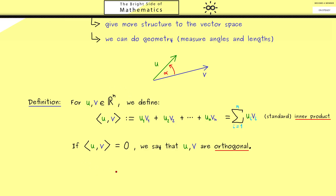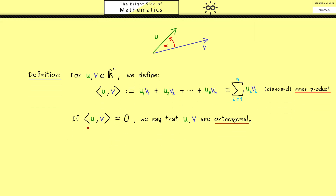Later we will also consider other geometries. For example, if we consider more abstract vector spaces we can consider more abstract geometries on them. In fact we could also consider strange geometries on Rn — this will not be so hard because we only need an abstraction for the inner product. And in order to do this we need to talk about the crucial properties of this inner product.